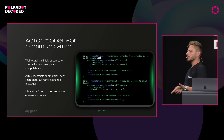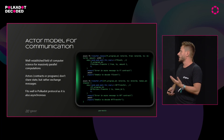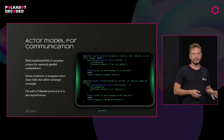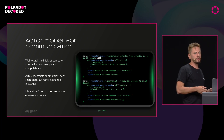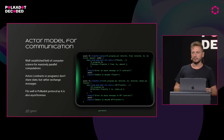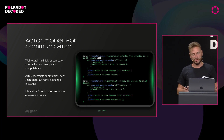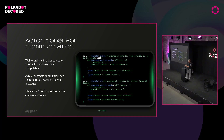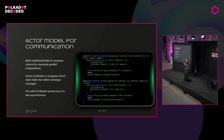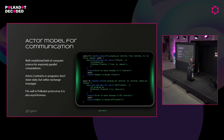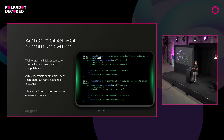The actor model is a well-established field of computer science, known to be good for distributed and parallelizable computations. In blockchain, it doesn't need to be distributed because everybody shares one state — but using this model we can actually store only some part of the state on each collator or validator.